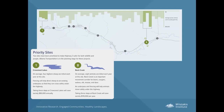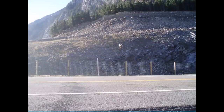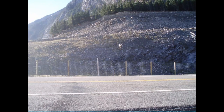Throughout this whole process with Road Watch in the Pass, we engaged in dialogue with both Alberta Environment Parks and Alberta Transportation throughout the entire Roadwatch program. The site at Crowsnest Lakes has been mitigated — fencing has been put up there that ties to an existing bridge structure. Bighorn sheep are now prevented from coming onto the highway.